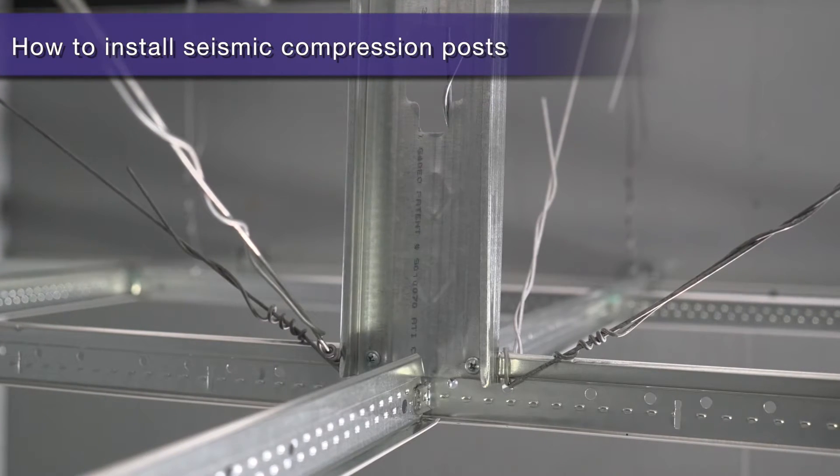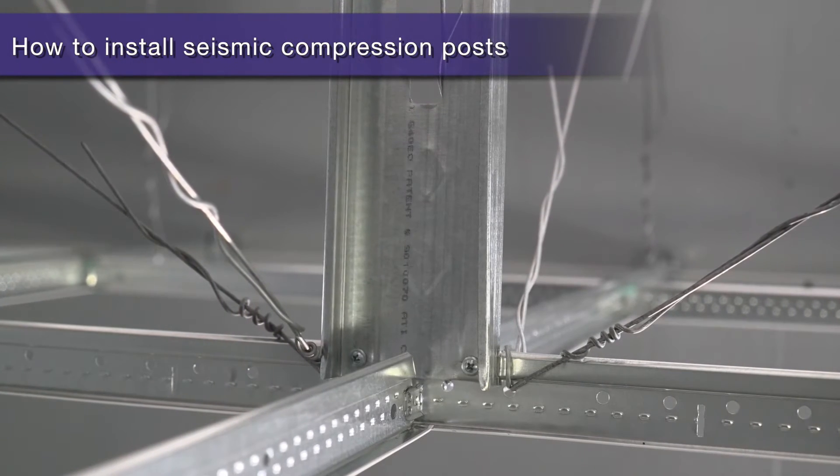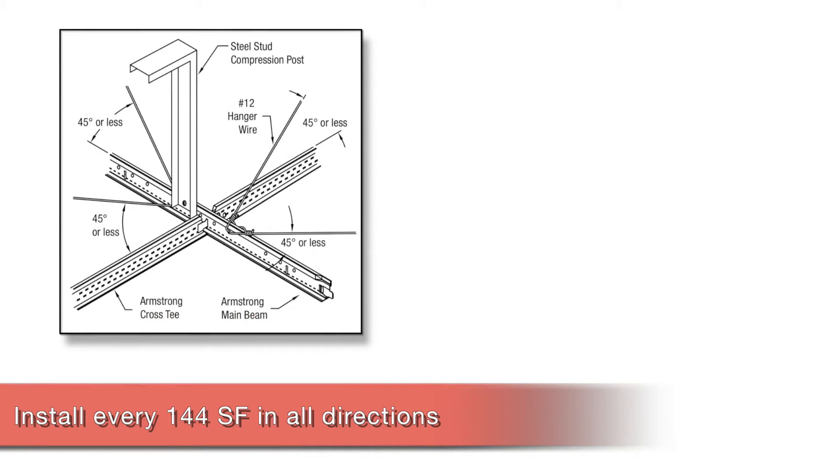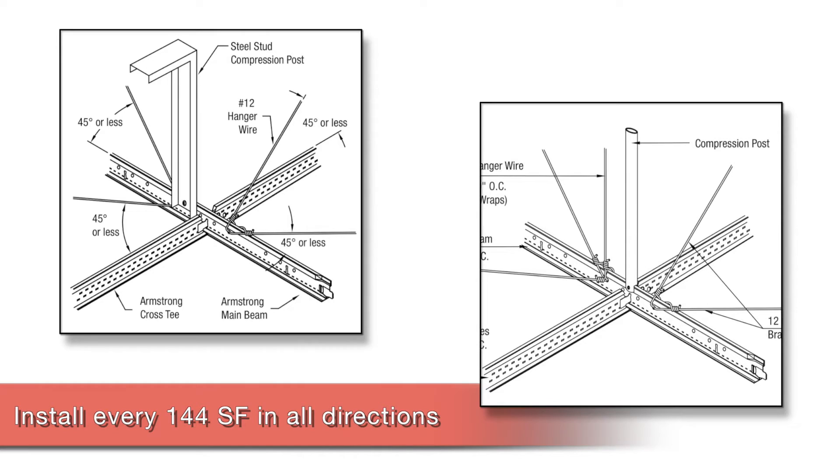Now, let's talk about compression posts, how you construct them and with what frequencies they are required. Basically, compression posts occur every 144 square feet across the ceiling plane. If your room is less than 144 square feet, you shouldn't need to use a post.